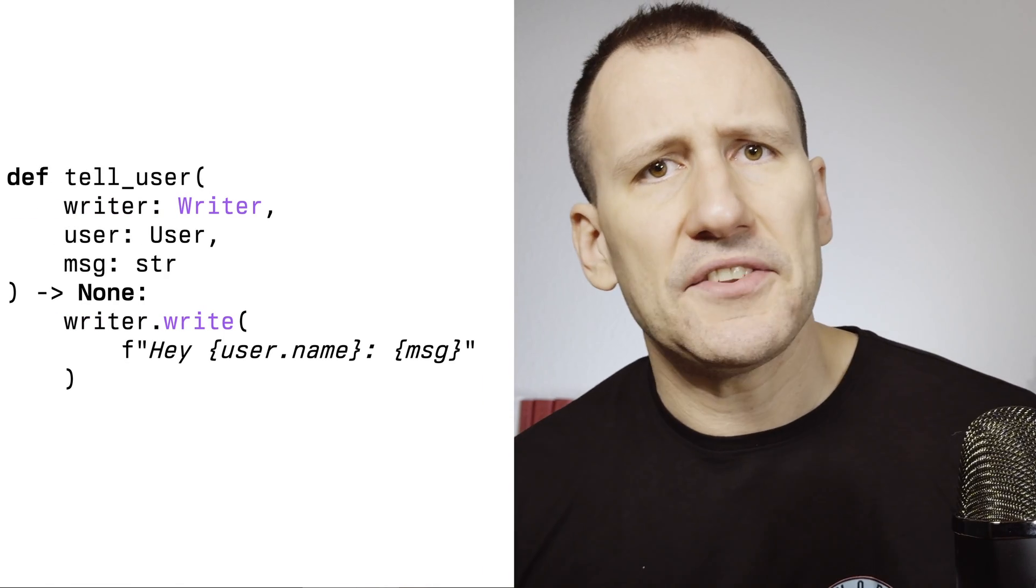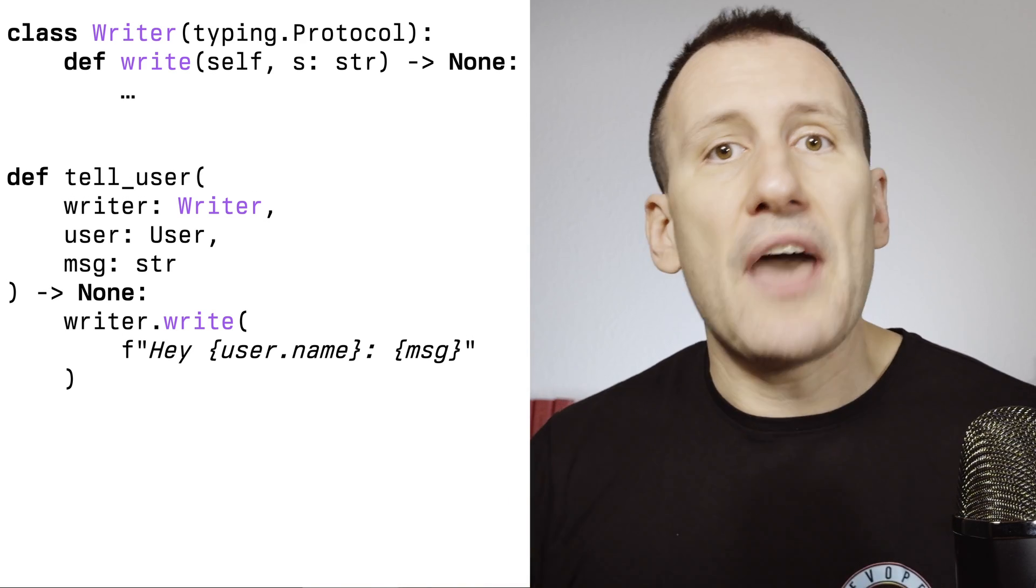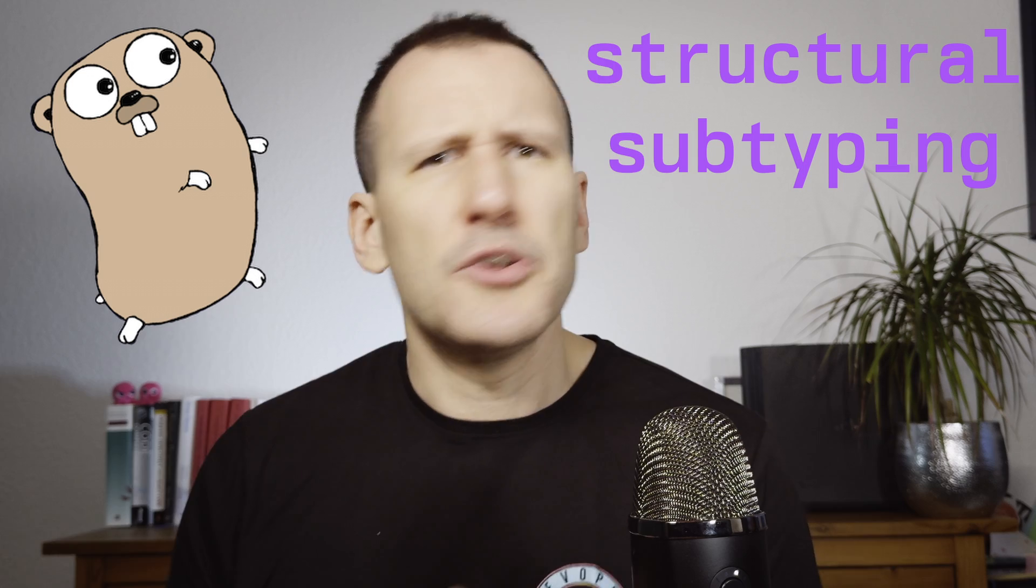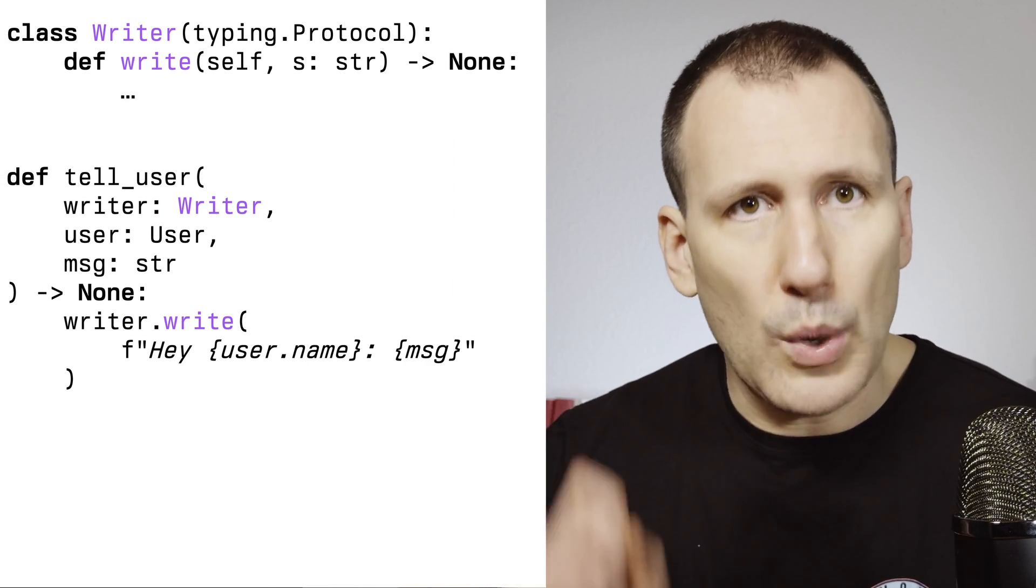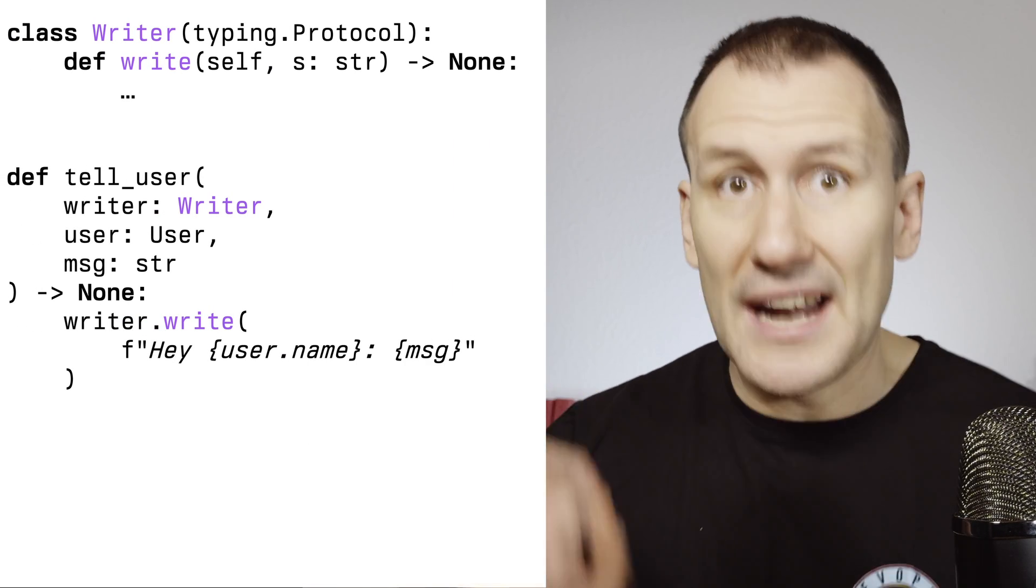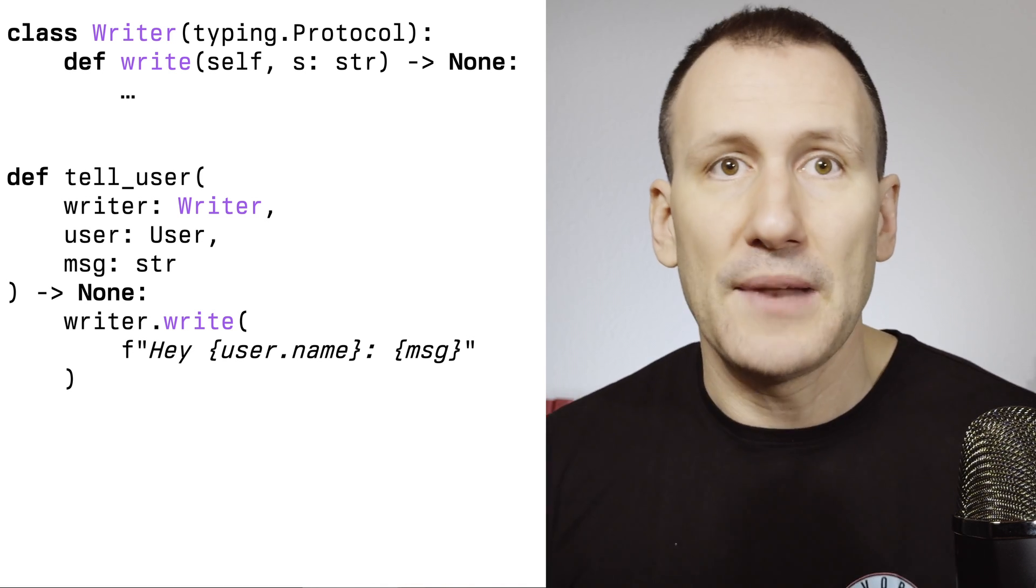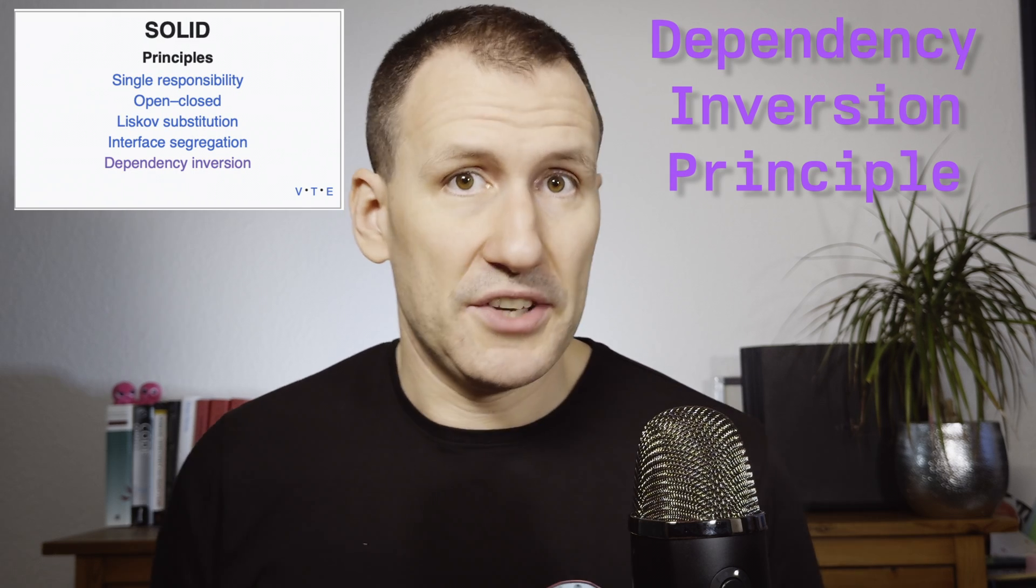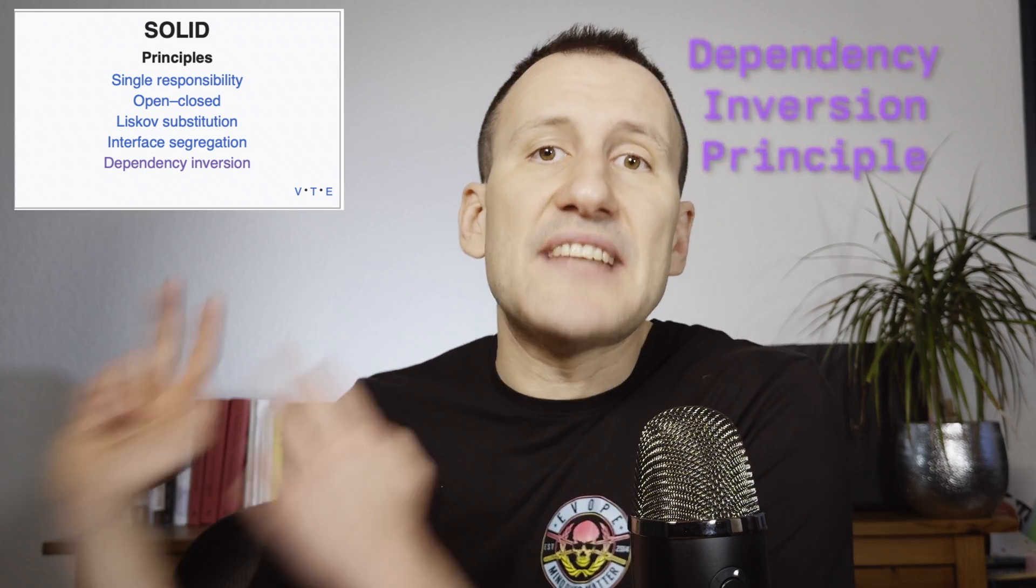Now, if I add type hints and define an interface using in this case typing.protocol, which is Python's underappreciated take on structural subtyping, you know, the one that Go uses, where every class that implements that protocol is considered a subtype of the class. In this case, every class that has a write method that takes a string and returns a none is a writer. The class does not have to subclass anything and it doesn't even have to know that the writer protocol exists in the first place. So at this point, we don't have just dependency injection. We've also implemented the dependency inversion principle, which is the D in solid. All this principle says is that you should program against interfaces, not implementations, which is exactly what we do here.